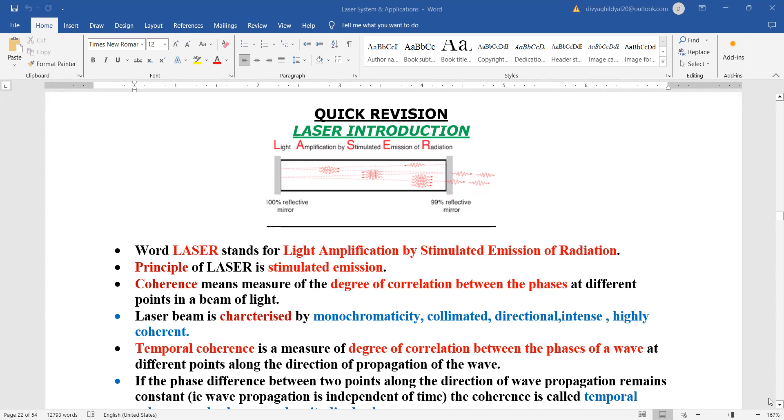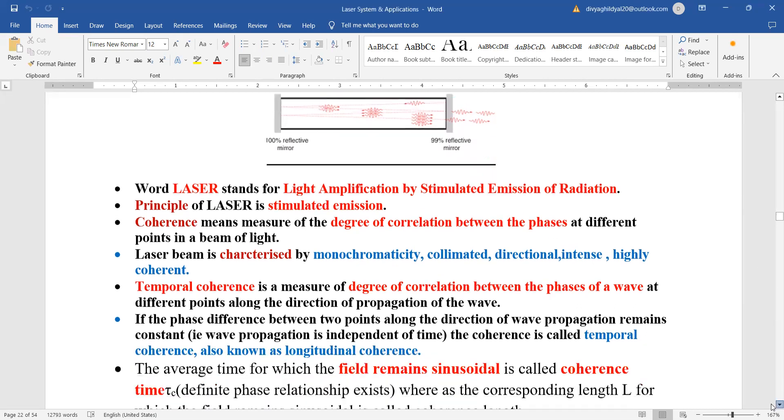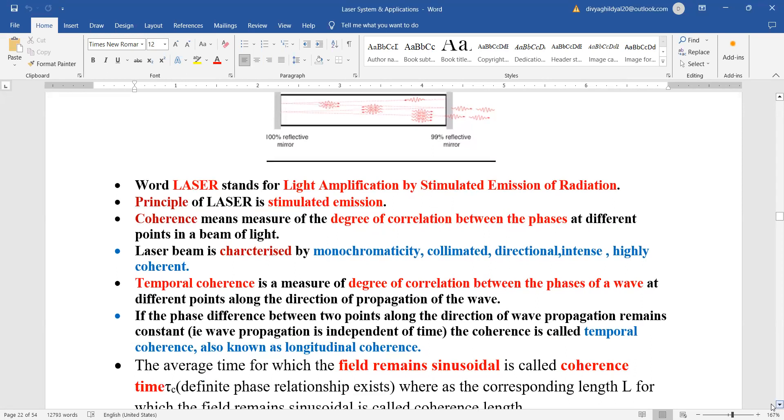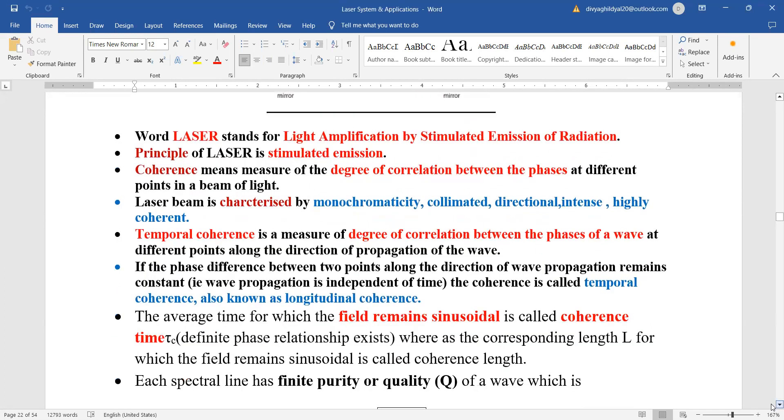What is the principle of laser? Stimulated emission. What do you mean by the term coherence? Coherence means measure of the degree of correlation between the phases at different points in a beam of light.